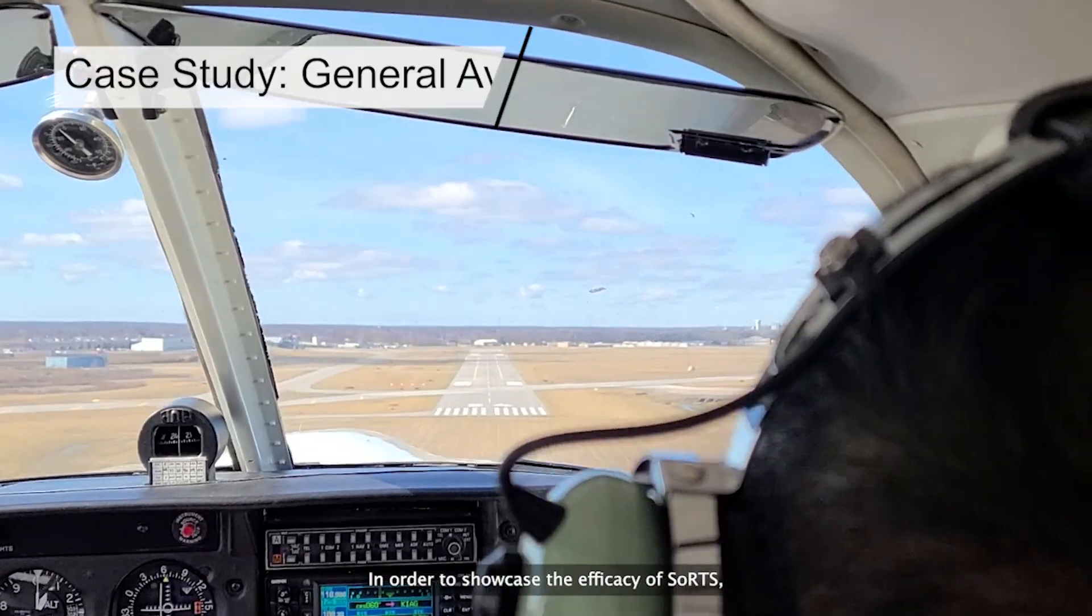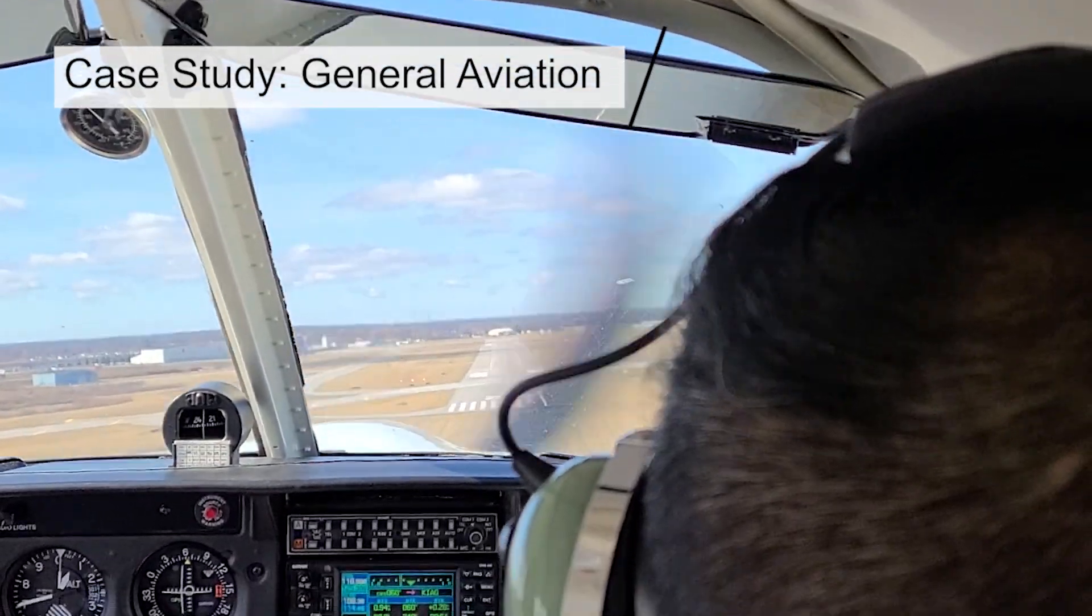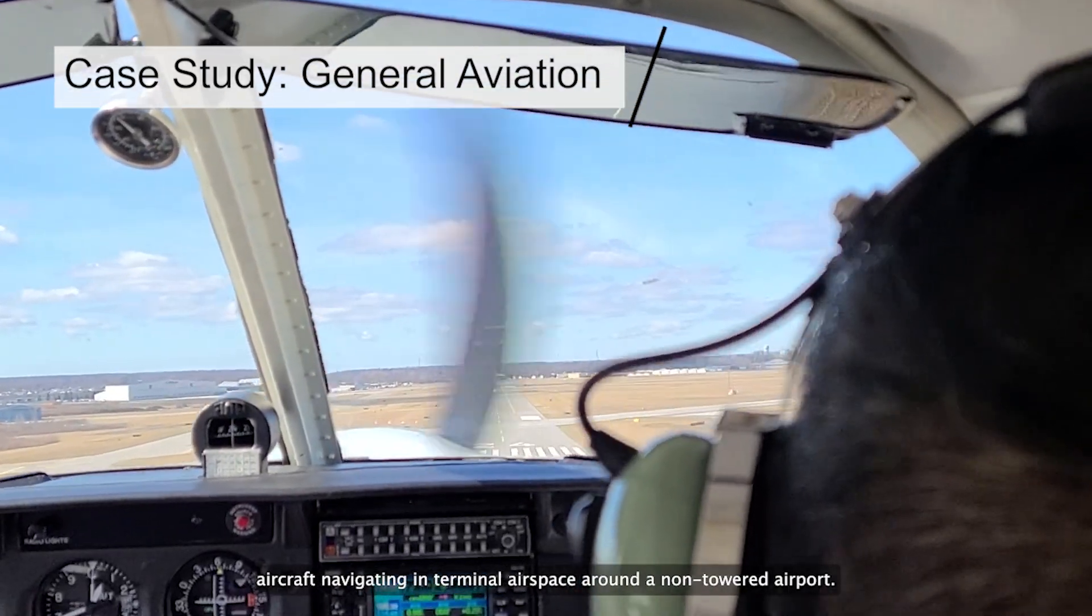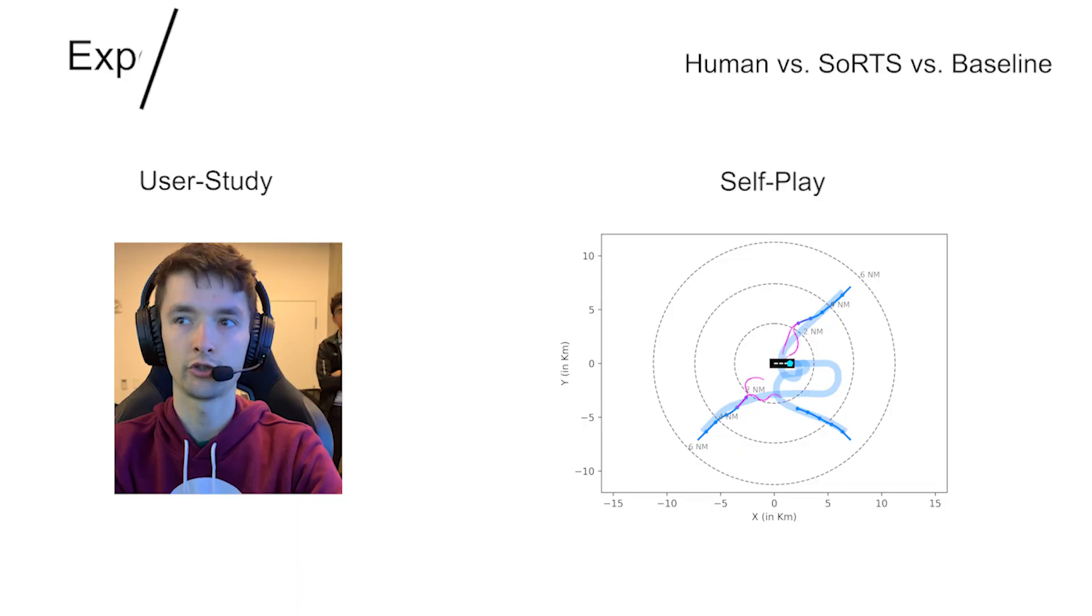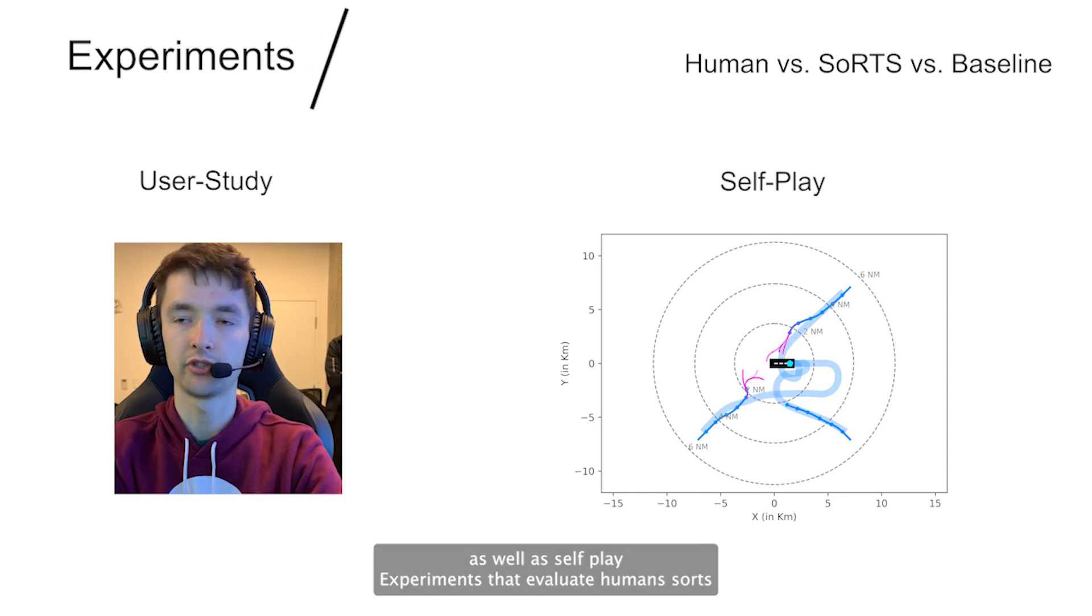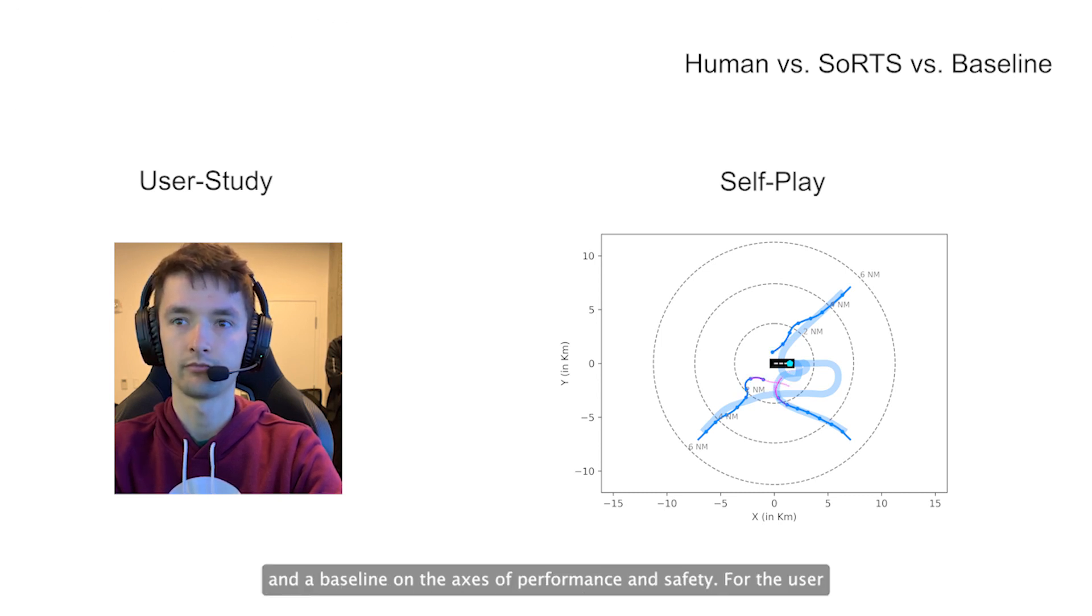In order to showcase the efficacy of SORTS, we choose a use case of general aviation aircraft navigating in terminal airspace around a non-towered airport. We design a within-subject user study as well as self-play experiments that evaluate humans, SORTS, and a baseline on the axis of performance and safety.